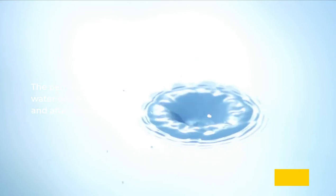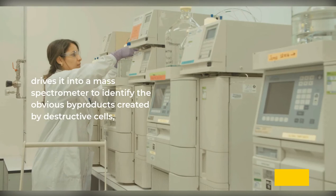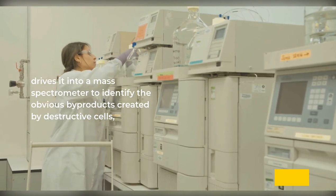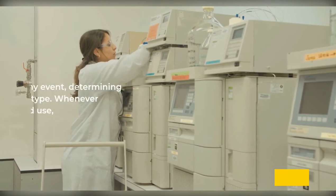The pen delivers a drop of water onto suspect tissues and then drives it into a mass spectrometer to detect the telltale byproducts created by harmful cells, even determining their subtype.